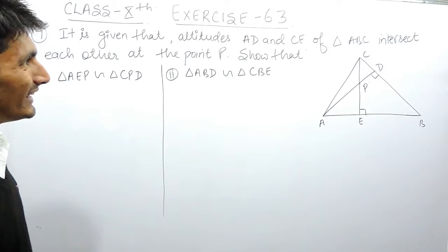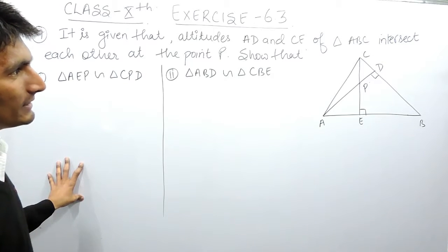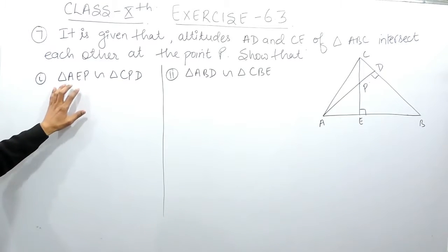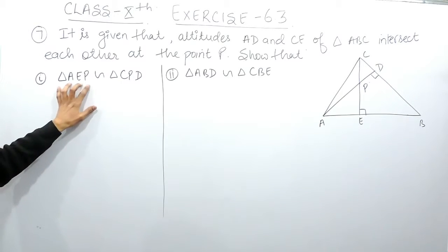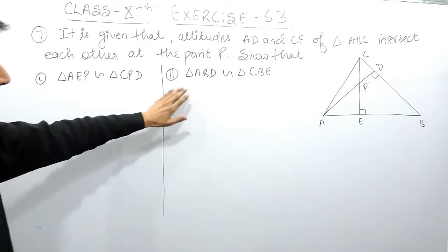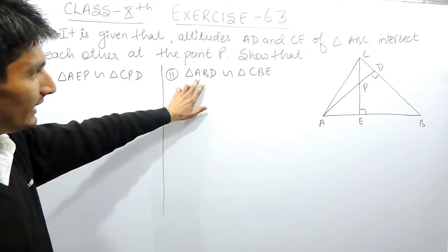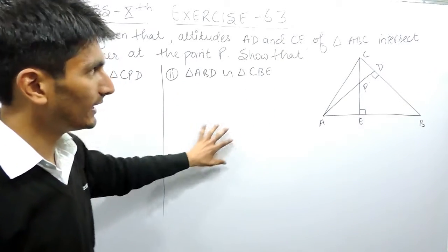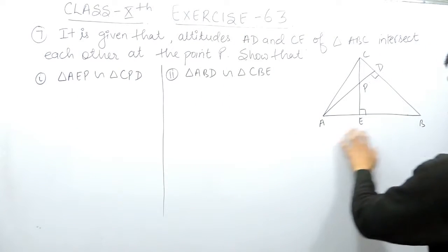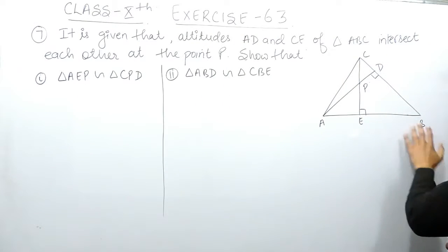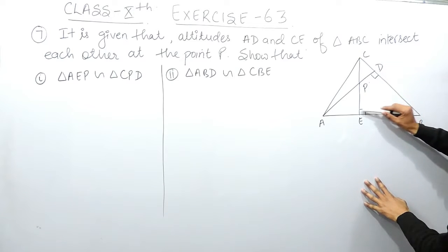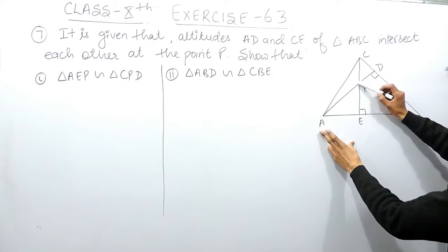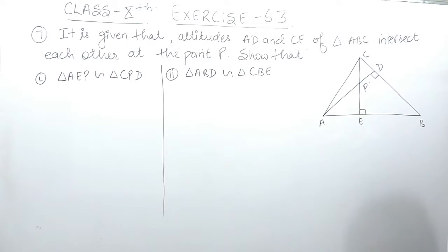The question says: it is given that altitudes AD and CE of triangle ABC intersect each other at the point P. You have to show that in the first case triangle AEP is similar to triangle CPD, and in the second case triangle ABD is similar to triangle CBE. Triangle ABC is given where CE is the first altitude and AD is the second altitude, which intersect at P.